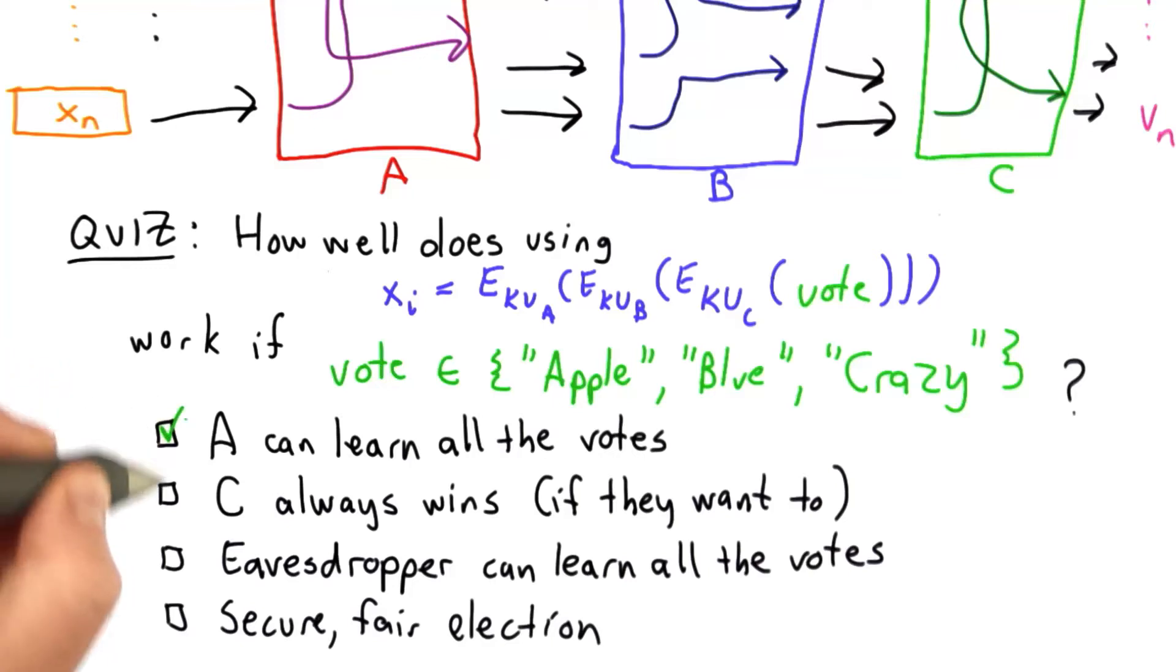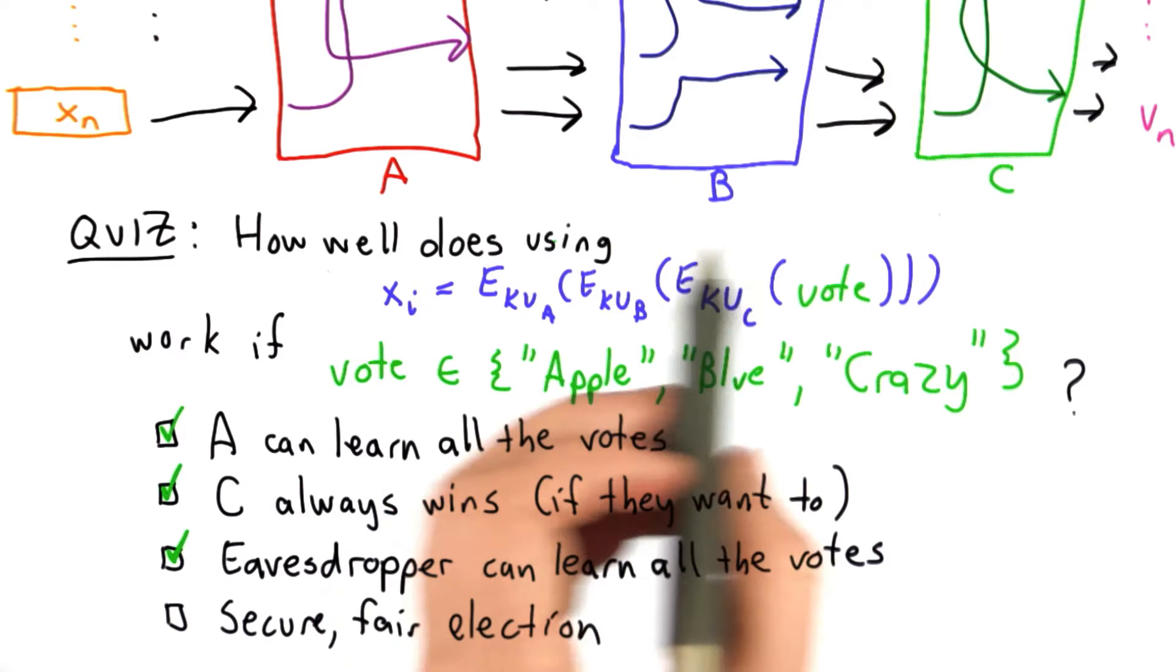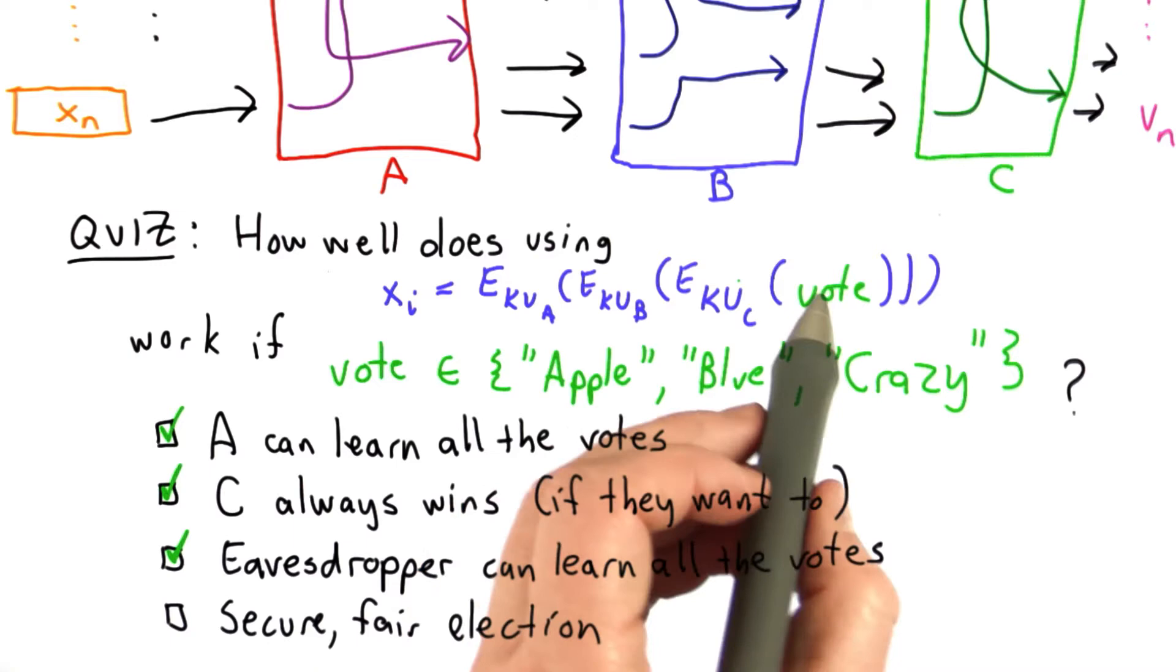The answer is it doesn't work very well. The reason for this is that anyone observing these messages, given that there's only a small set, can compute this value given the public keys of C, B, and A.